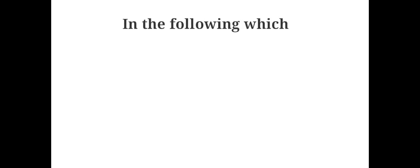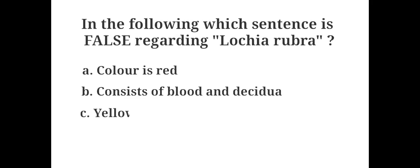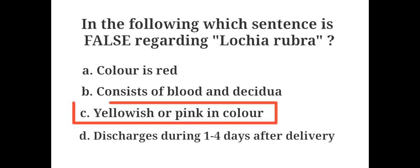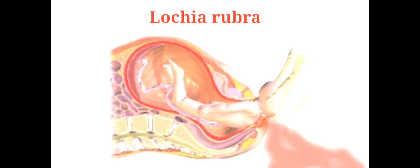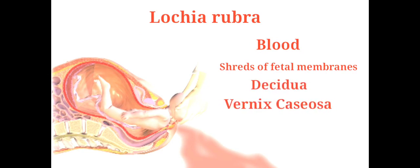In the following, which sentence is false regarding Lochia rubra? A. Color is red, B. Consists of blood and decidua, C. Yellowish or pink in color, D. Discharges during 1-4 days after delivery. The answer is C. Yellowish or pink in color. Lochia rubra is the first discharge post delivery. It is composed of blood, shreds of fetal membranes, decidua, vernix caseosa, lanugo and membranes. It is red in color because of the large amounts of blood it contains.